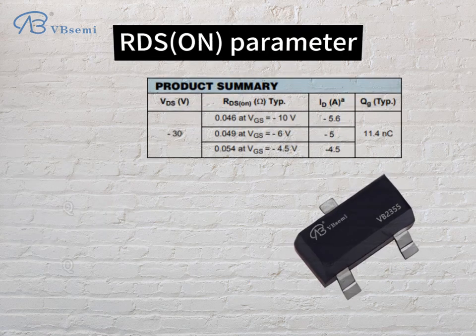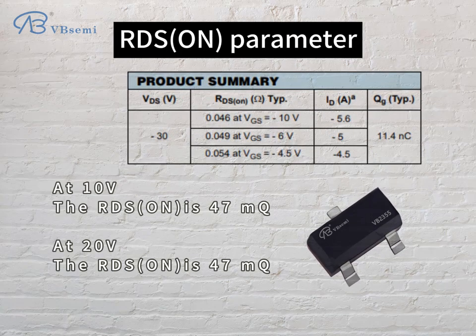At VGS=10V, the RDS-ON is 47mΩ. At VGS=20V, the RDS-ON is also 47mΩ.